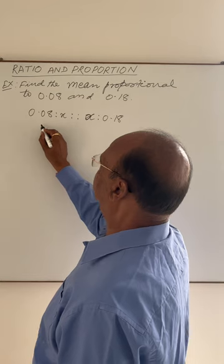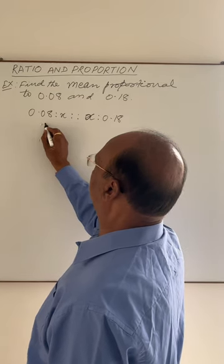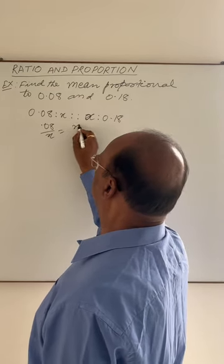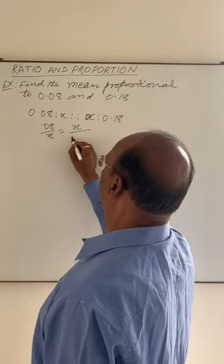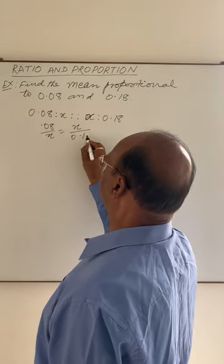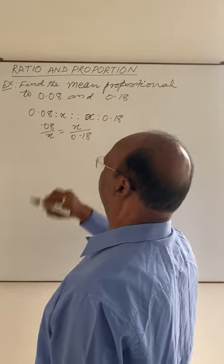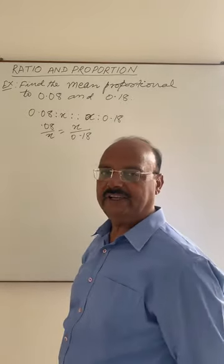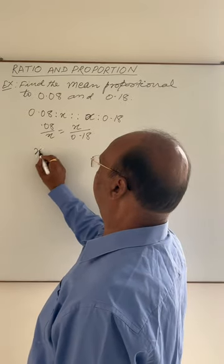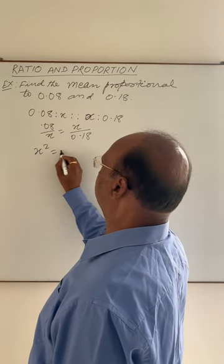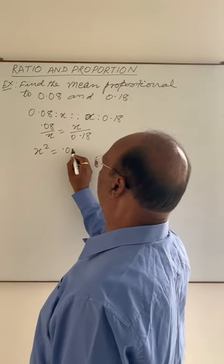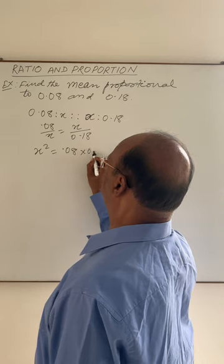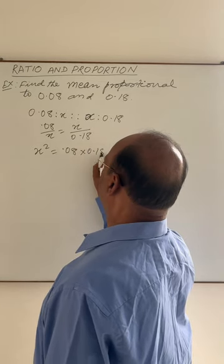Or we can write 0.08 upon x is equal to x upon 0.18. We have to find out the value of x here. By cross multiplication, x square is equal to 0.08 into 0.18.